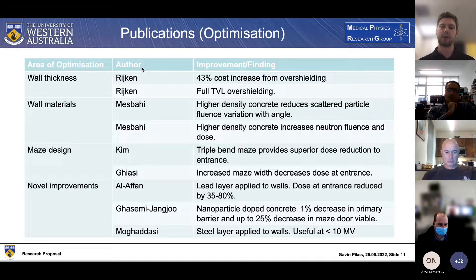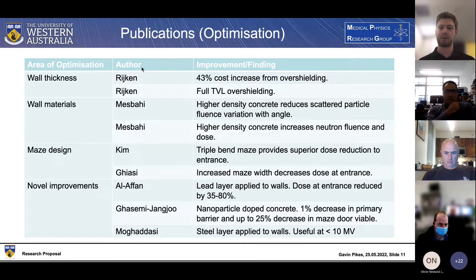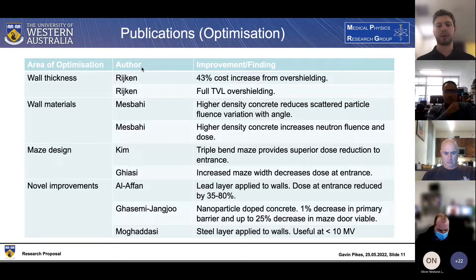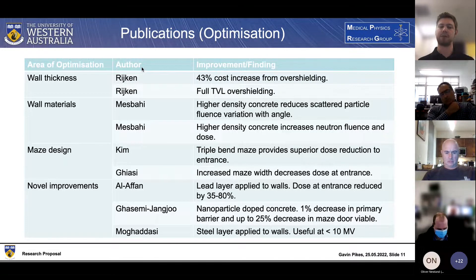The MARY bunker does have a triple bend within its maze, however the first bend isn't a 90-degree angle, so there could be some room for optimization there. Additionally, we can look at the width of the maze corridor - a higher width corridor actually reduces the dose at the entrance as well. In terms of novel improvements, LFR looked at layering the walls of the maze with lead, which resulted in a 35 to 80 percent decrease in dose at the entrance, however again this is with a lower energy beam as above 10 MV we deal with photoneutron problems with high-Z materials.